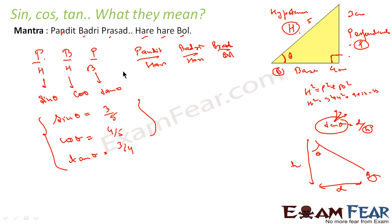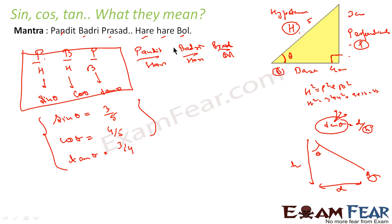We find sine theta, cos theta, and tan theta. Using the mantra Pandit Badri Prashad Hari Hari Bool: sine theta = P/H, cos theta = B/H, tan theta = P/B. This is something we have to learn — it is the basic building block of trigonometry.